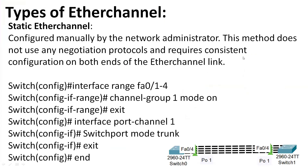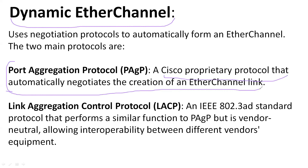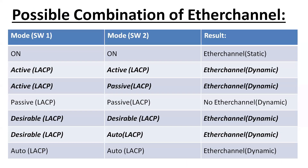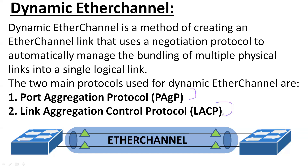Now we will create EtherChannel dynamically. There are two dynamic methods: the first is PAgP (Port Aggregation Protocol), which is a Cisco proprietary protocol that automatically negotiates the creation of EtherChannel. The second is LACP (Link Aggregation Control Protocol), which is an open standard. Both protocols have different modes for creating EtherChannel.